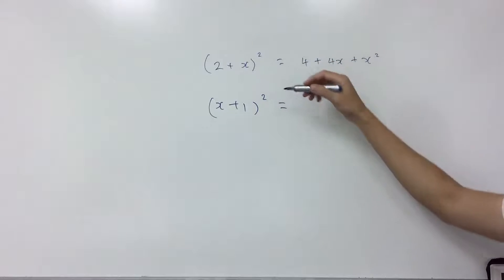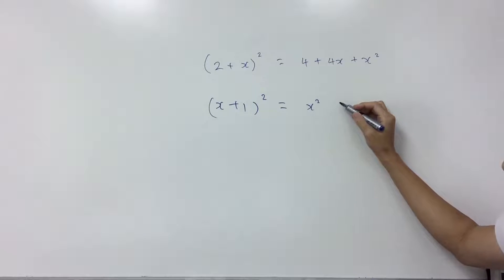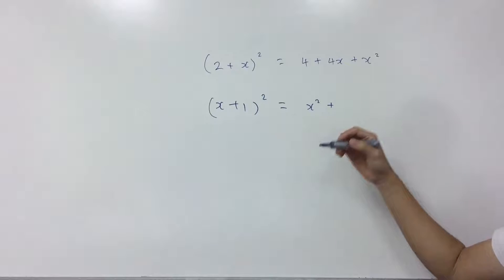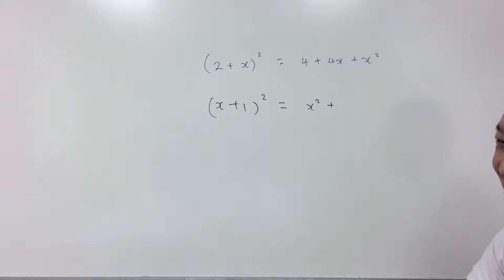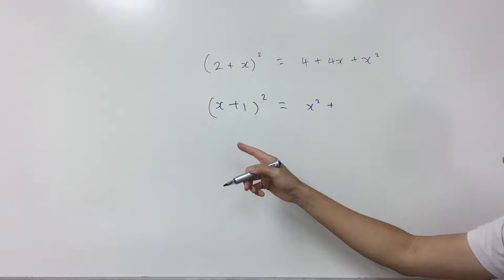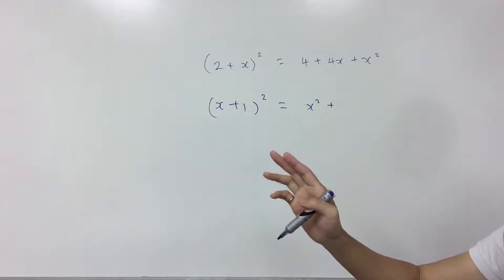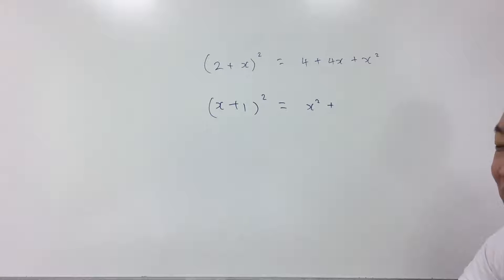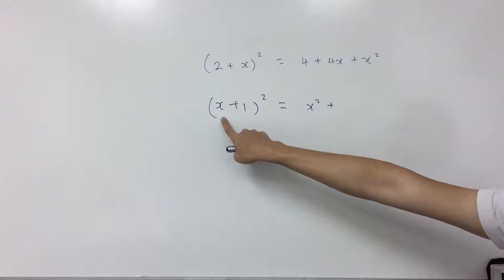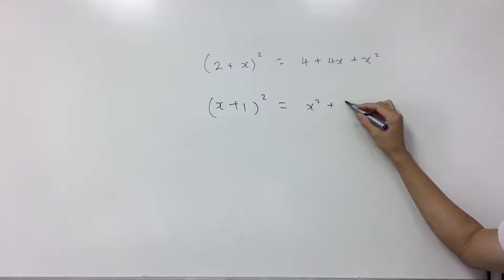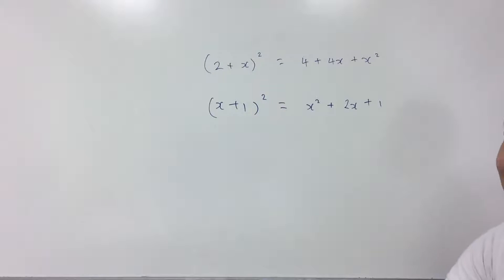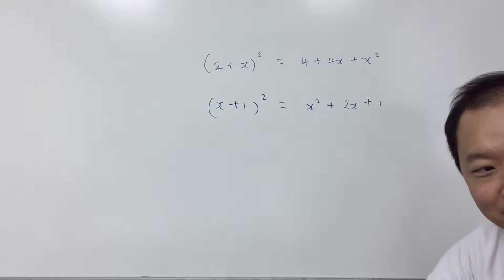Remember this is a square. X squared. Plus. Two AB — two AB. Two times A times B. Two times X times one, right? Two times A times B is two X. Then plus one squared — one squared is one. Okay? So the processor must be fast.